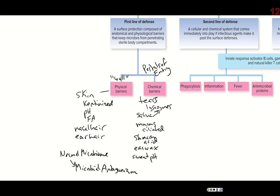That basically takes care of the chemical barriers. The vagina also has a low pH with normal bacteria that prefer this environment. But if something disrupts that environment, it's not uncommon to get a yeast infection, because the fungus starts to take over since the microbiome has been disrupted.